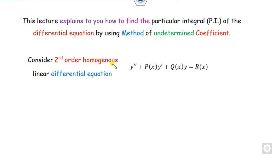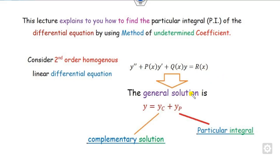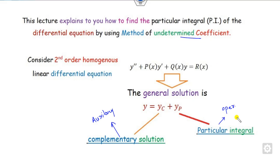The objective of this lecture is to see how you can find the particular integral, abbreviated as PI, by using the method of undetermined coefficients. This method is applicable only when r(x) is non-zero. Whenever r(x) is non-zero, we find the solution of the second order differential equation using yc, the complementary solution, as well as the particular integral. We already know how to find the complementary solution using the auxiliary equation. For the particular integral, you can use the operator method, the method of undetermined coefficients, or the variation of parameters.